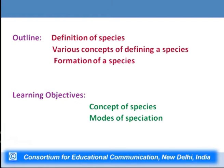This lecture will focus on what exactly a species is, what are the various concepts of defining a species, how we define species, which type of animals can be categorized as species, and which populations together can be categorized as species. Then I will discuss how a species is formed — what particular mechanisms or processes give rise to a new species from the existing population. The learning objectives are that after this lecture we should be able to explain the concept of species and the various modes of speciation.